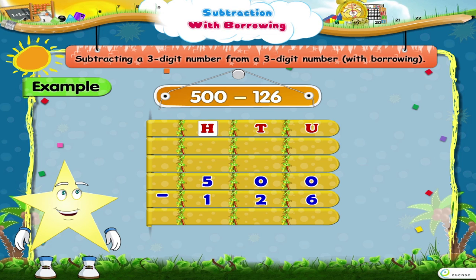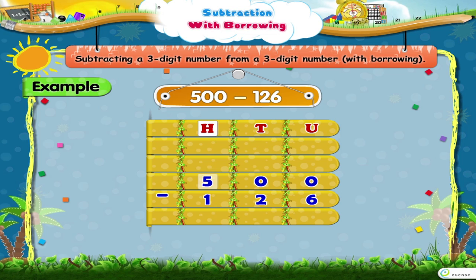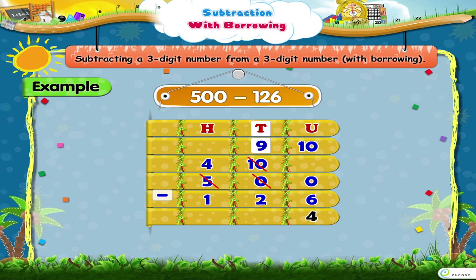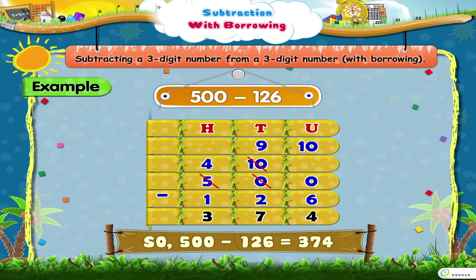We now go to the hundreds place. The hundreds place has 5. We borrow tens for the tens place. Hence, the hundreds place now has 4 and the tens place now has 10. We now borrow a 10 from the tens place for the units place. The tens place is left with 9. Now, 10 minus 6 equals 4. 9 minus 2 equals 7. And 4 minus 1 equals 3. So, the difference is 374.